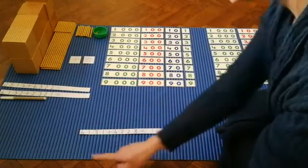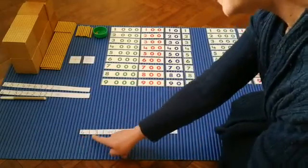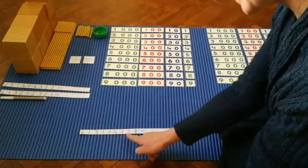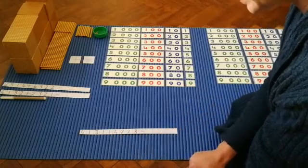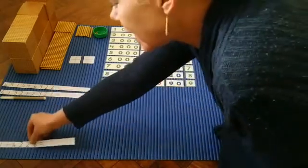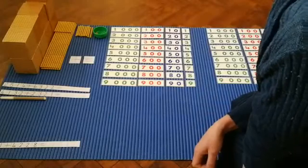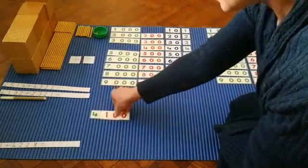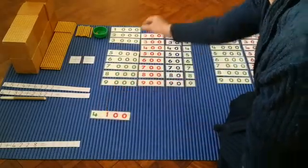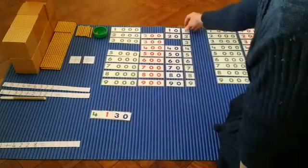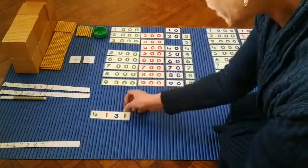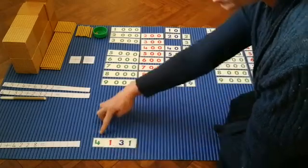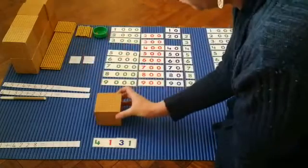This is 4131 plus 4228 equals - let's see what that equals. First I'm going to make my number 4131 and then I'm going to make my golden beads 4131.